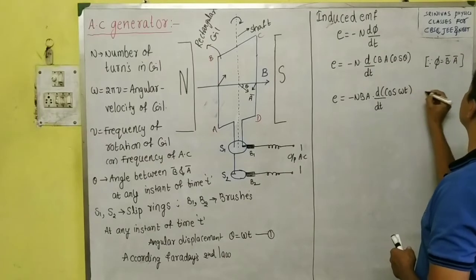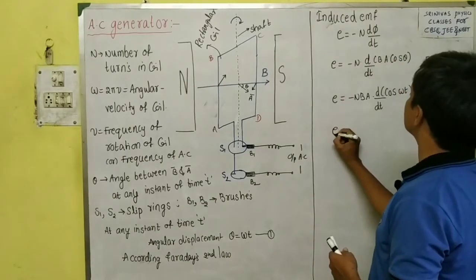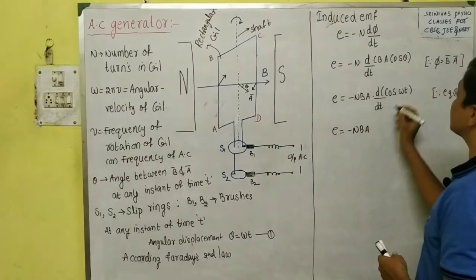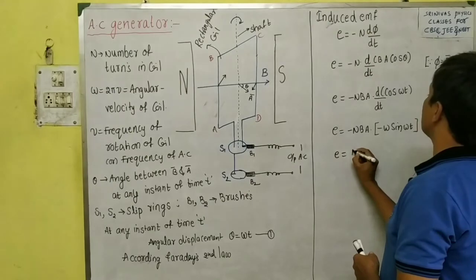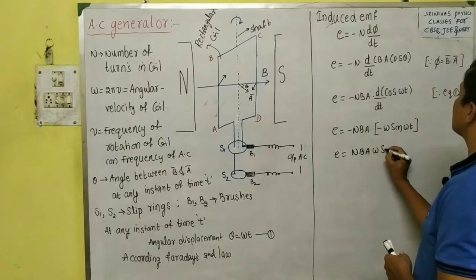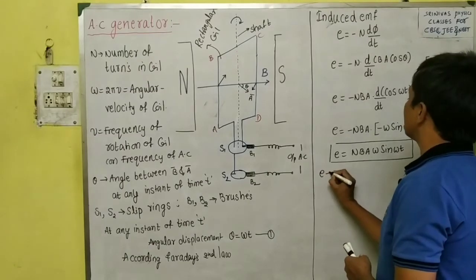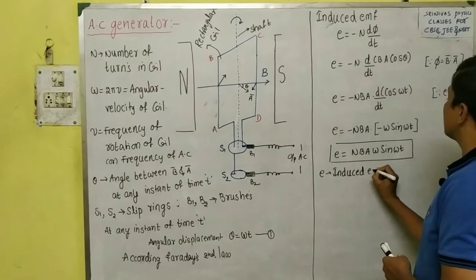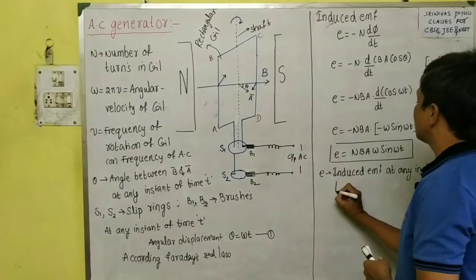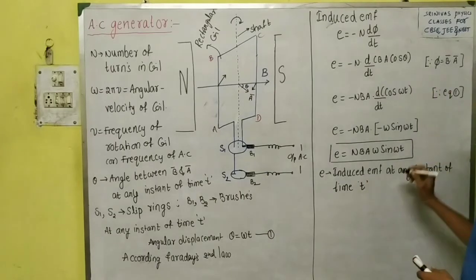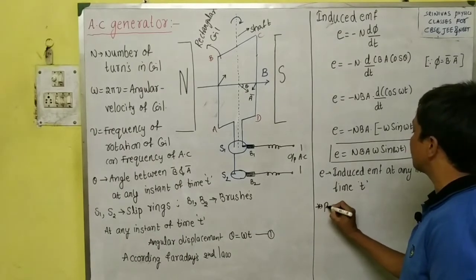Differentiating cos(ωt) gives −ω sin(ωt), so e = −NBA × (−ω sin ωt). The two negatives cancel, giving induced EMF e = NBAω sin(ωt). This is the induced EMF at any instant of time t. The induced EMF varies with time — it is time dependent.